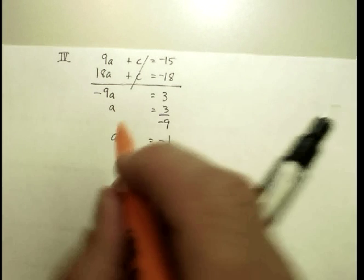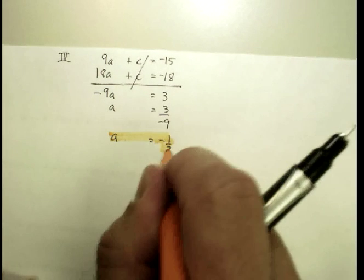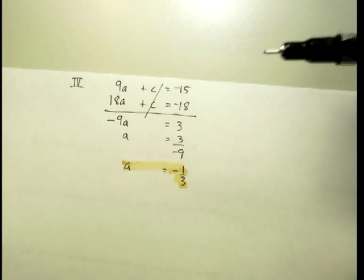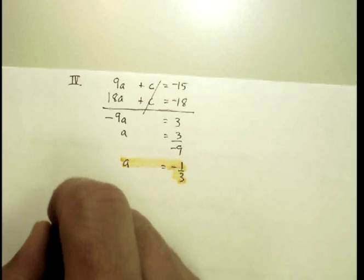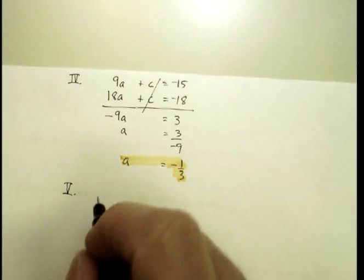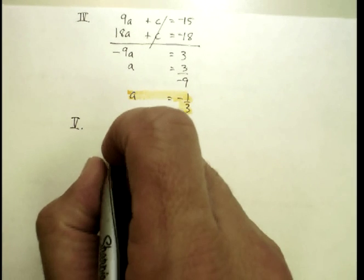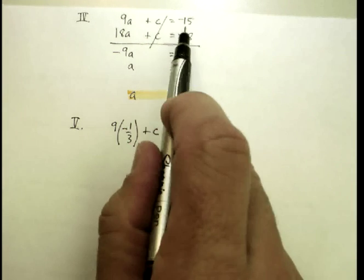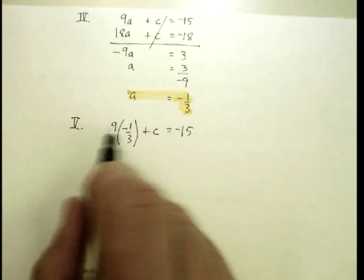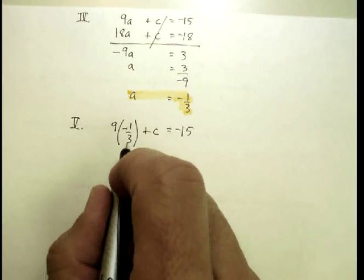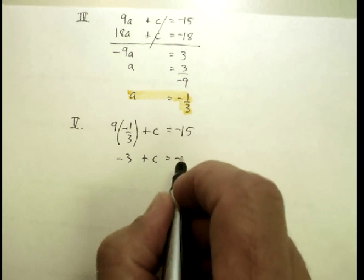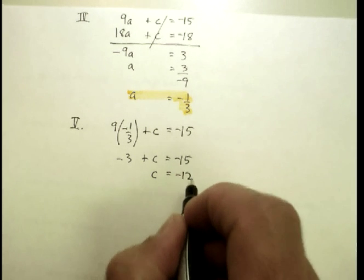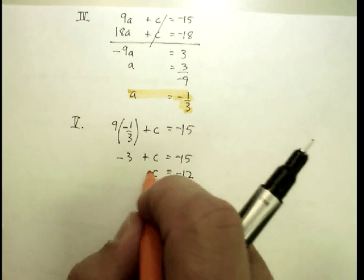And now I've got one of my variables. I've got my a. What do I do with that? Well, I'm going to plug it in to one of these two equations and find out what my c value is. I'm just going to use the top one. It doesn't really make any difference which one you do. I'm going to say 9 times (-1/3) + c = -15. That's going to give me -9/3 or -3. I'm going to add 3 to this side, and you end up with c = -12. And there's my second variable.